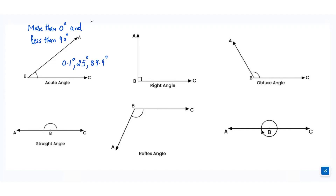The second type of angle is right angle. The angle which is equal to 90 degree is a right angle. Right angle has an exact value of 90 degrees, and we always represent it like this.